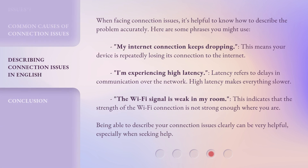When facing connection issues, it's helpful to know how to describe the problem accurately. Here are some phrases you might use: "My internet connection keeps dropping" — this means your device is repeatedly losing its connection to the internet. "I'm experiencing high latency" — latency refers to delays in communication over the network, and high latency makes everything slower. "The Wi-Fi signal is weak in my room" — this indicates that the strength of the Wi-Fi connection is not strong enough where you are. Being able to describe your connection issues clearly can be very helpful, especially when seeking help.